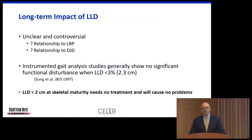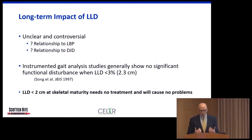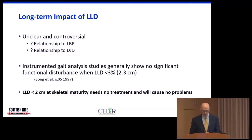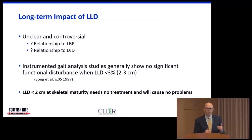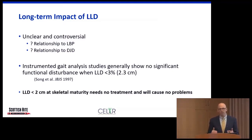Whether limb length difference has a long-term impact on low back pain or degenerative joint disease is still somewhat controversial. Instrumented gait analysis studies generally show no significant functional disturbance when the leg length difference is less than three percent of the contralateral long side — roughly two-and-a-half centimeters or less than an inch. Our goal is that at skeletal maturity, if the limb length difference is less than an inch, ideally less than two centimeters, the patient and family can be told this won't have any ill effect on ankles, knees, hips, or back.